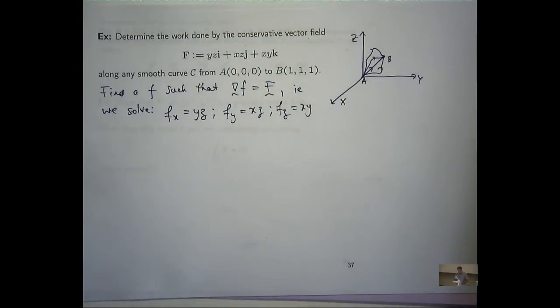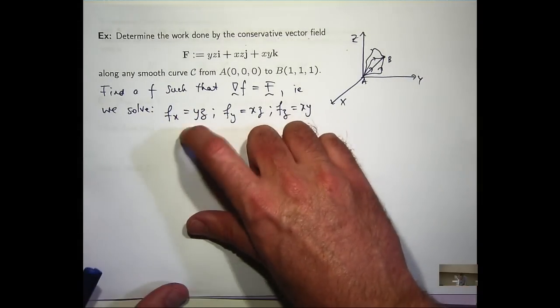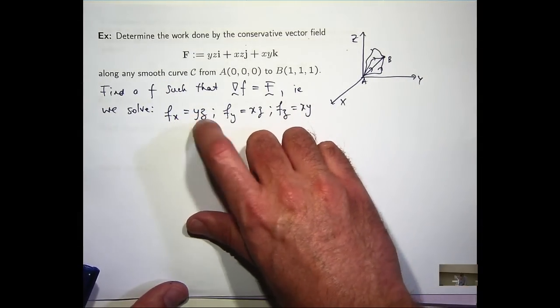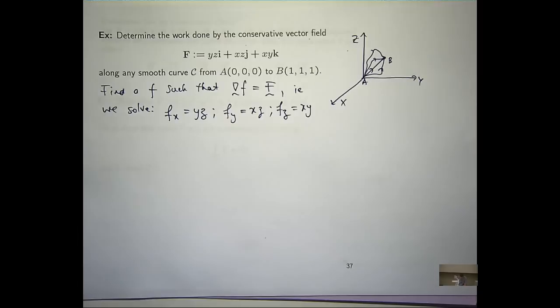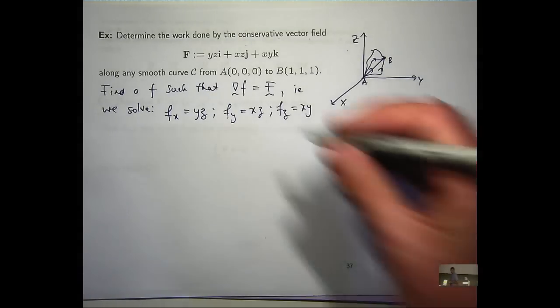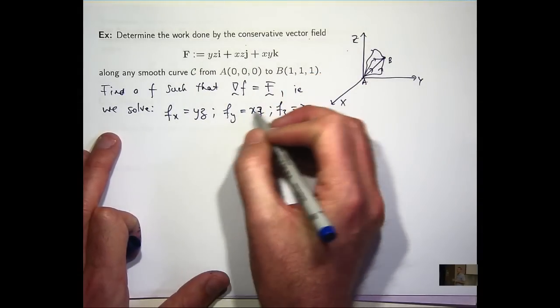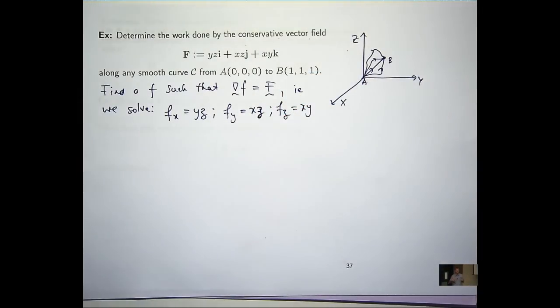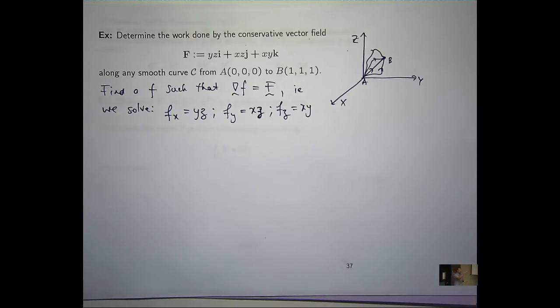So I've got three equations there. And essentially if I integrate them, so if I integrate over here, I'll get YZ with respect to x, I'll get f equals XYZ plus a function of y and z, which are like constants. If I integrate the middle one with respect to y, I'll get f equals XYZ plus, you know, a constant in inverted commas of integration, a function involving x and z. And similarly for the last one.